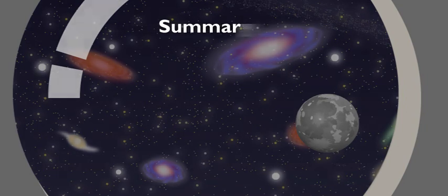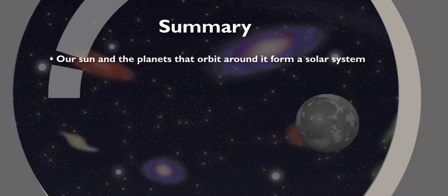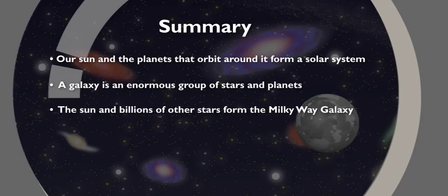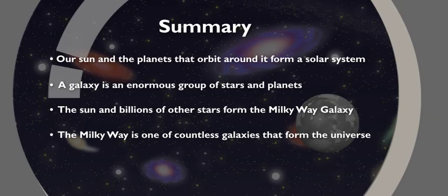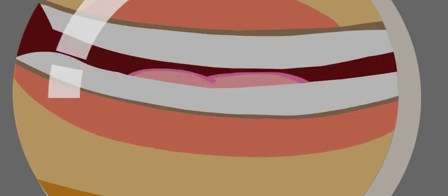Our sun and the planets that orbit it form a solar system. A galaxy is even bigger. A galaxy is an enormous group of stars and planets. I mean billions. Our galaxy is called the Milky Way, and it's just one of countless galaxies that form the universe. The universe is so humongous that distances are measured in light years. The universe seems so simple, but... It's simply enormous!